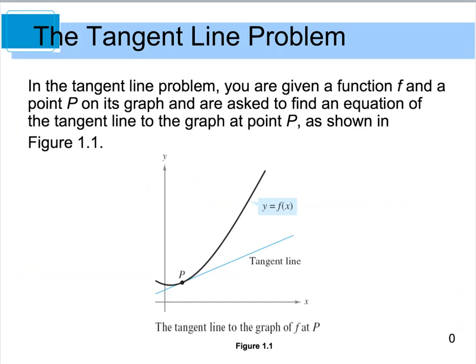With a tangent line problem, we are typically given some function and some point on the graph, and we're asked to find an equation of the tangent line to the graph at the point. And you can kind of see what this looks like. So here we have our function, we're given our point, and we want to find the equation of this tangent line. Very, very classic calc-type problem.